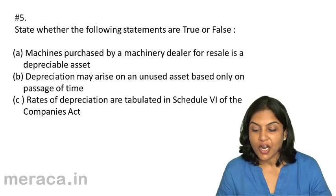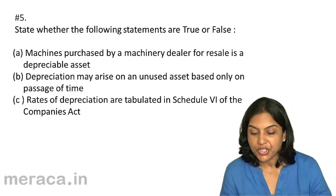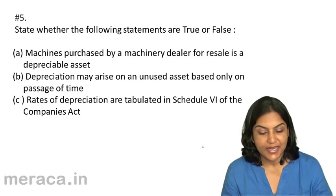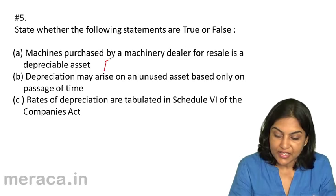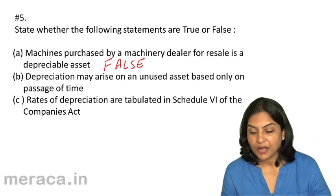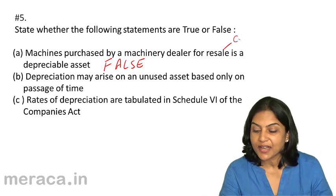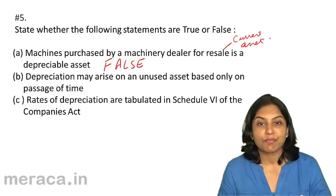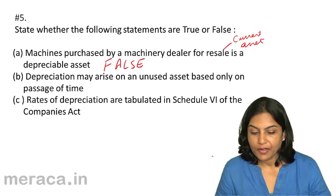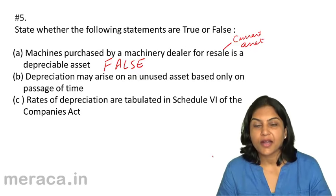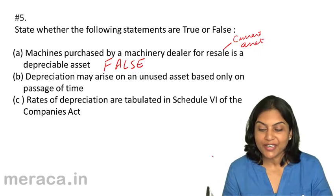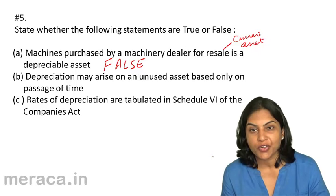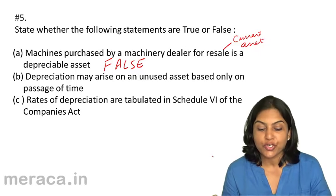State whether the following statements are true or false. Statement A: Machines purchased by a machinery dealer for resale is a depreciable asset. This should be false. Why? Because machines purchased for resale are a current asset, not a non-current asset. Any asset meant for resale is not a depreciable asset. So though machines are ordinarily considered a fixed asset, machines purchased by a machinery dealer for resale become goods for that dealer — a current asset.